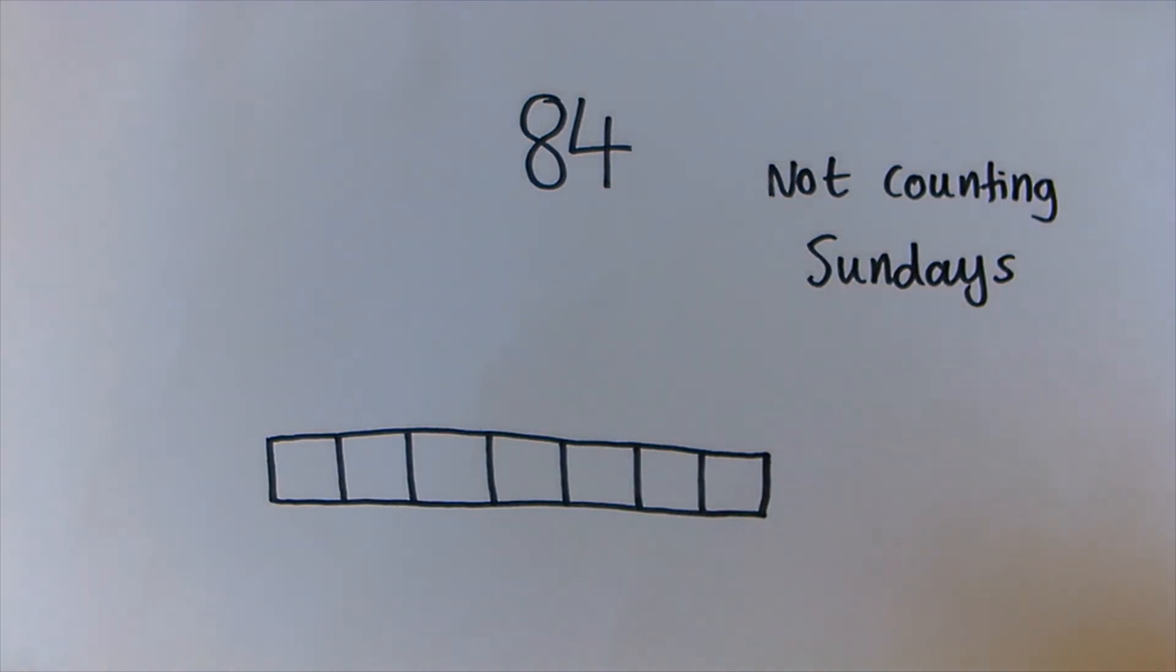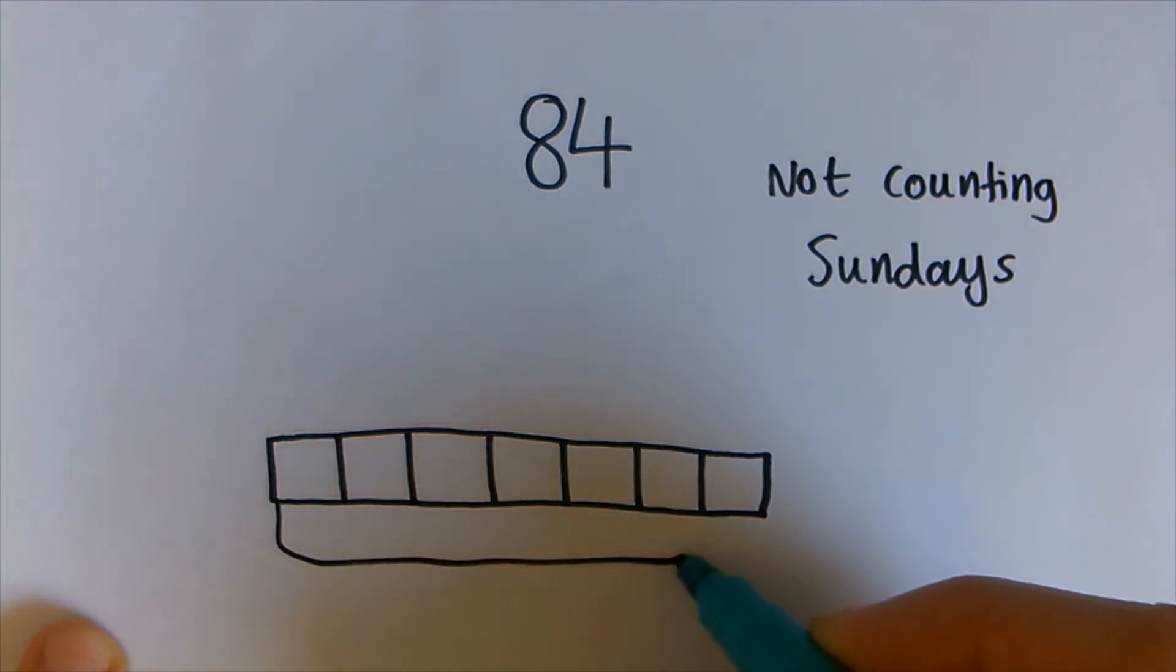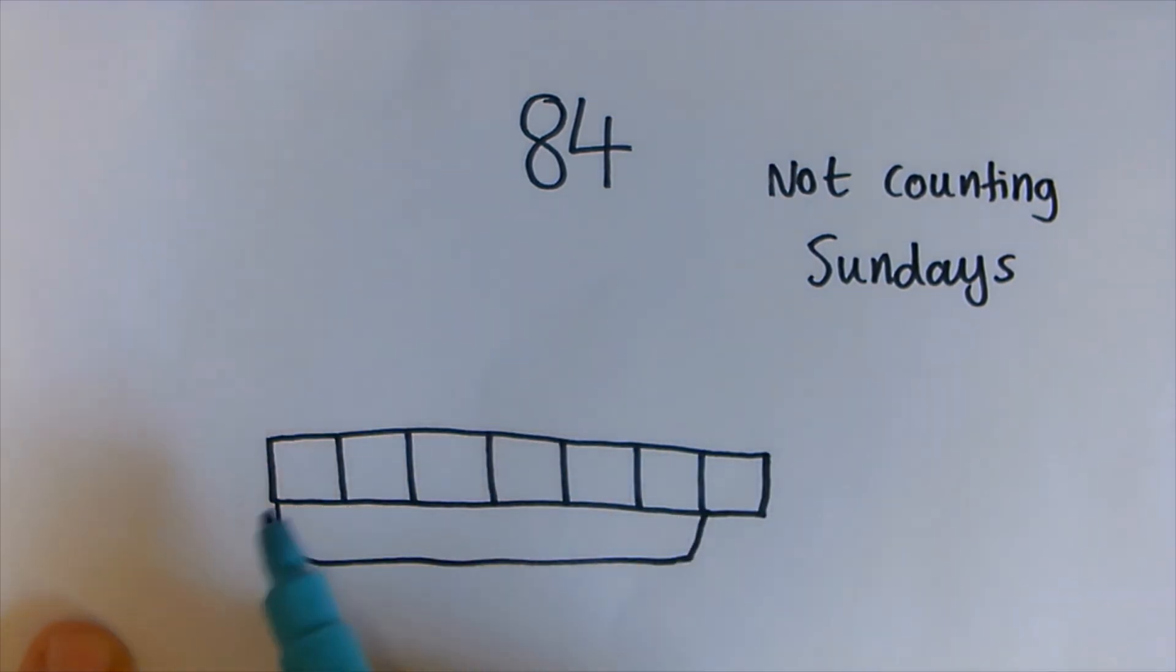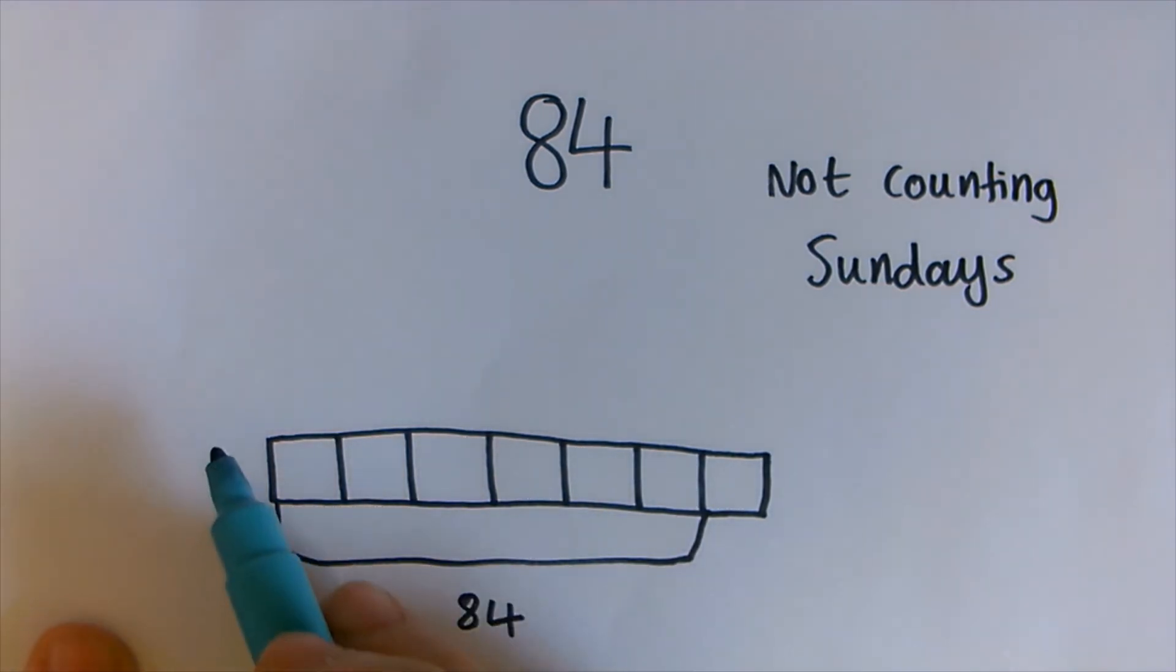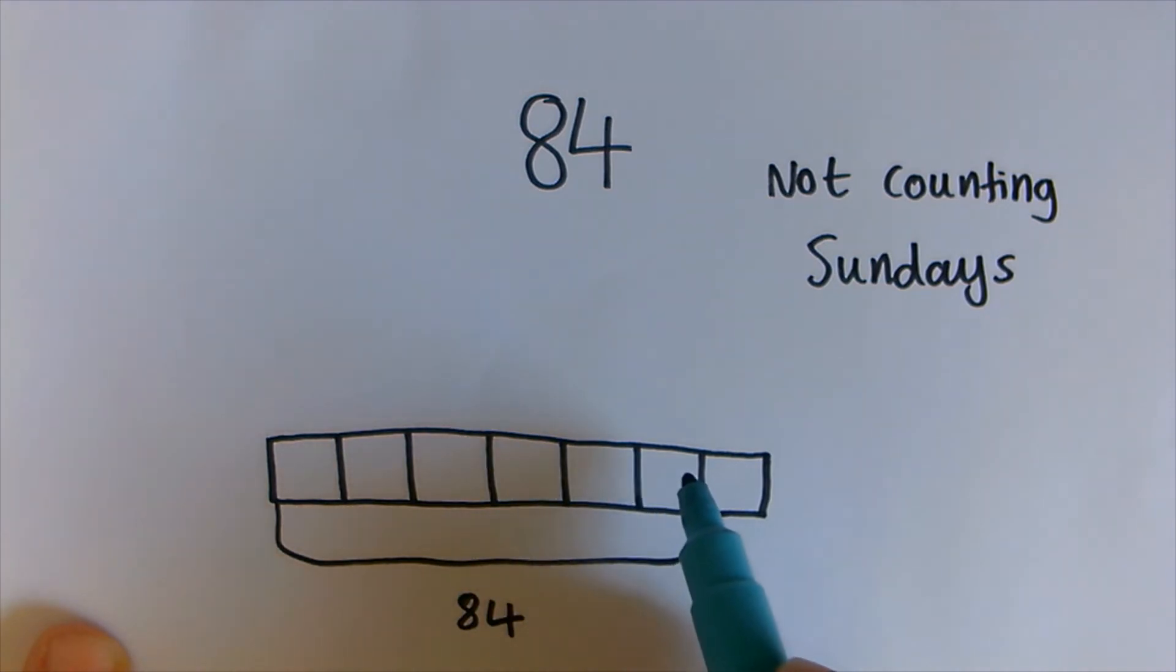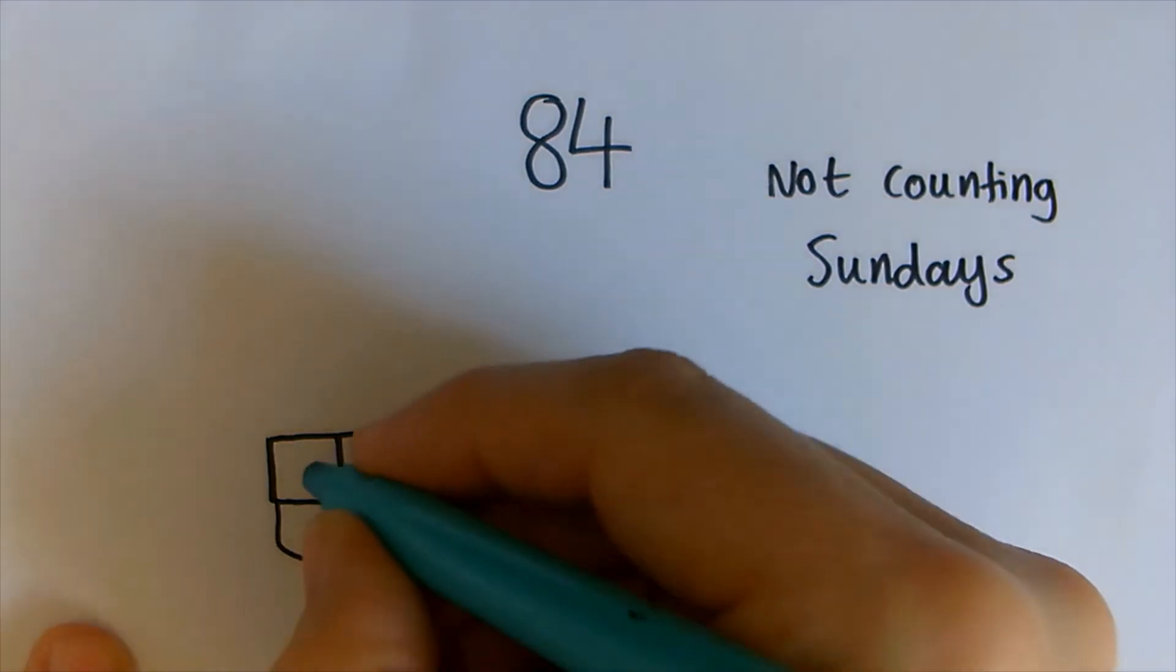So did you get the answer of 98? I'll show you how I got it. Actually, 6 out of every 7 of the days, so this is my week, 6 out of every 7 days makes her 84. So it's quite easy if we go 84 divided into 6 bits, which would be 14.